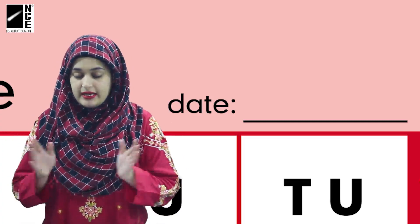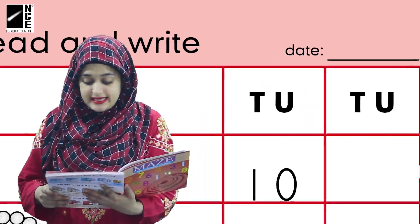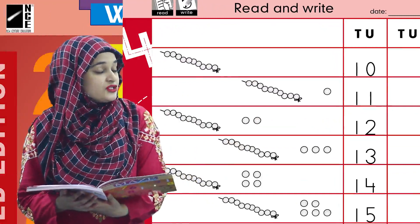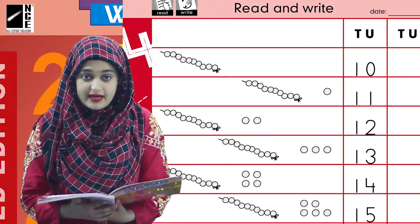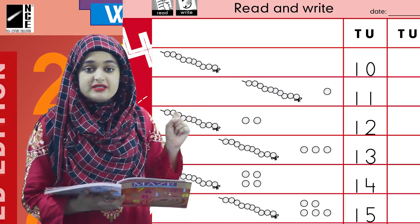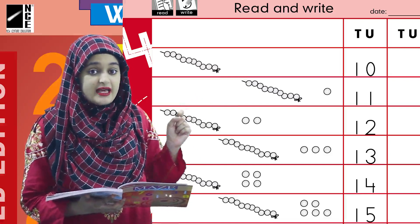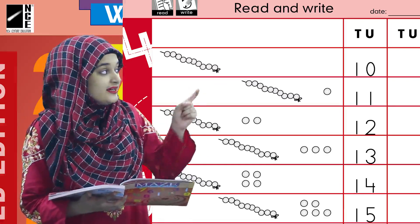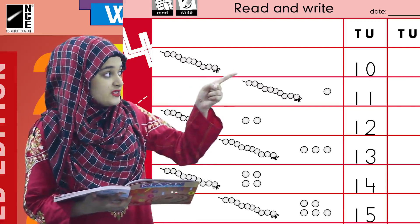Now children, here in your workbook you can see some strings. This is a string — a string of 10 beads. This is a string of 10 beads and you can see the number 10 written here. So a string of 10 beads has the number 10 written in front of it.